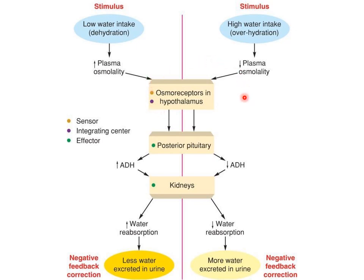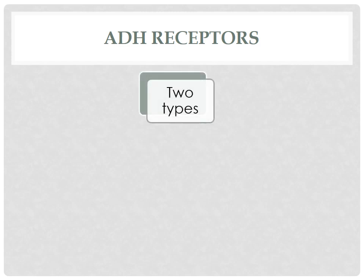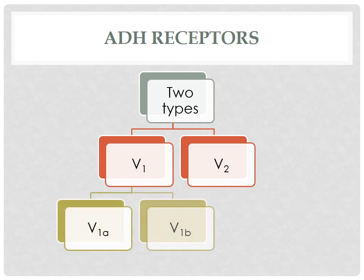As osmoreceptors detect increased plasma osmotic pressure, the hypothalamus sends signals to the posterior pituitary to release ADH, and this ADH acts upon the kidneys to increase water reabsorption. Coming to ADH receptors, there are two types of receptors for vasopressin: V1 and V2. V1 receptors are again subdivided into V1A and V1B types.